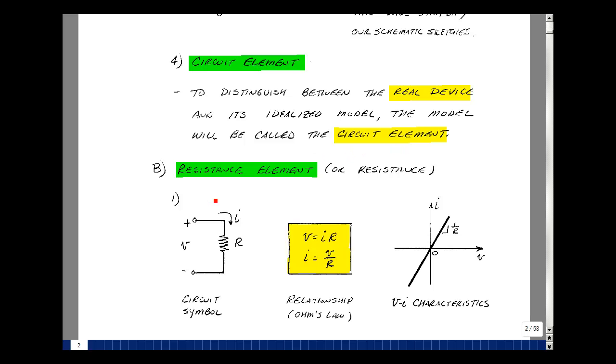Our first circuit element is called a resistance element, or just simply resistance. This is the electrical symbol for a resistance. It's a series of lines. I'm going to label the voltage and the current absorbing power, and then we'll label this as R, and it's going to mean resistance.